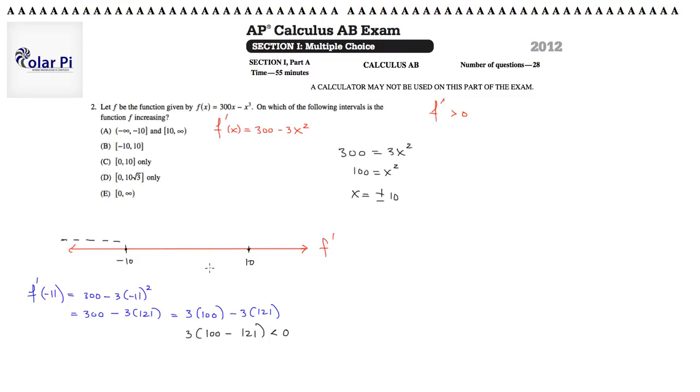And then between negative 10 and 10, we can cherry pick, which is, we could just find out what f prime of 0 is. And 0 is an easy number to plug in always. So we just get 300.